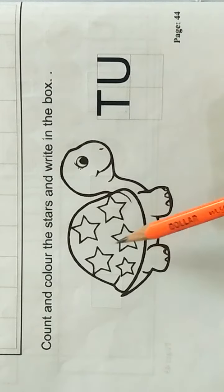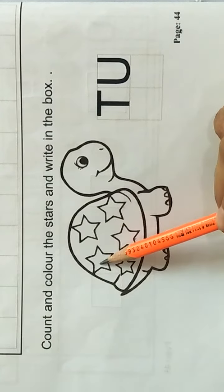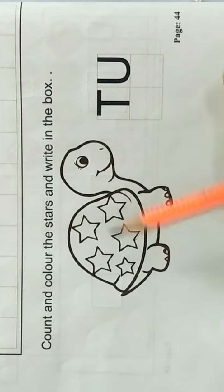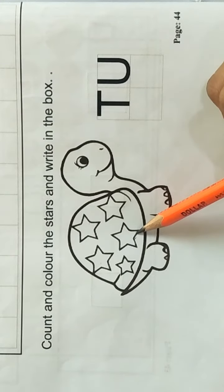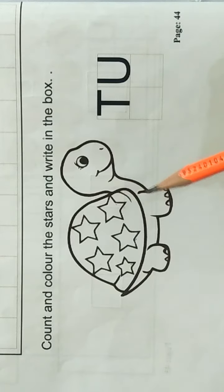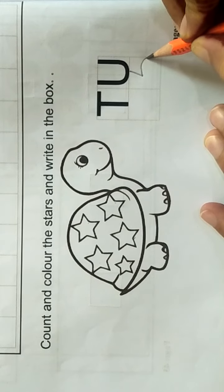How many stars are in the turtle? 1, 2, 3, 4, 5. How many stars are there? 5 stars. Right under you. 5.